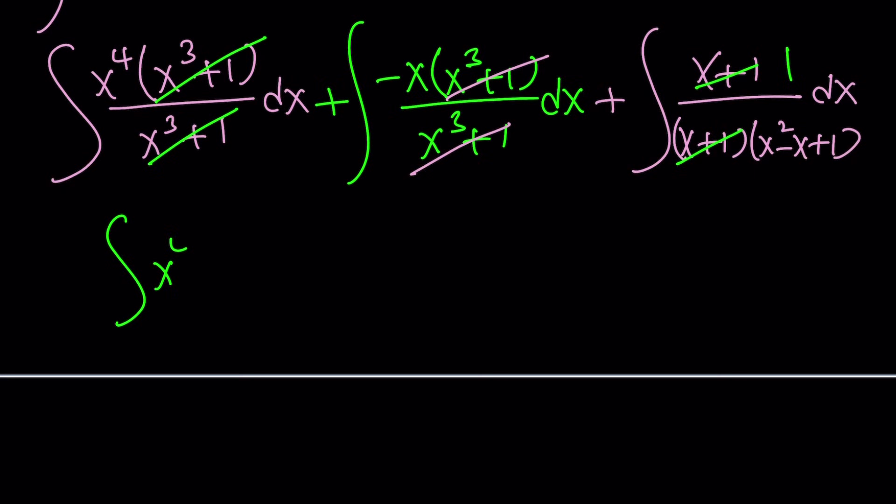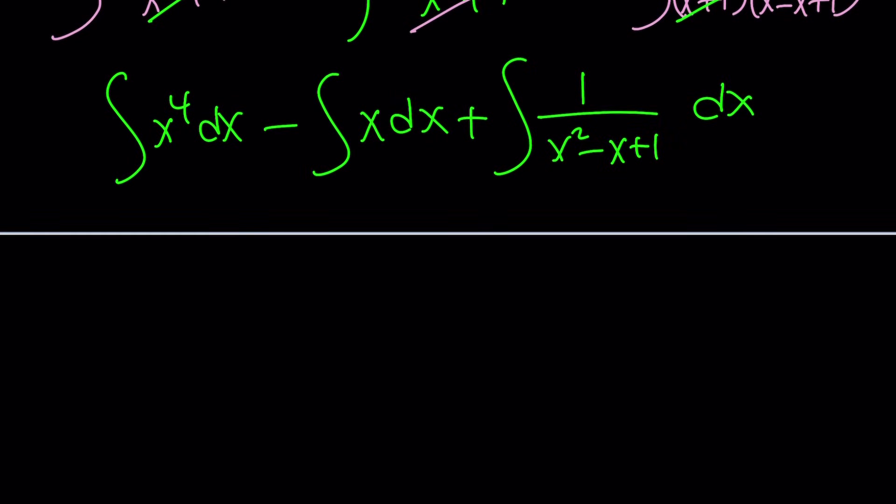Look at this. x to the fourth dx. Can't you integrate this? I can put the minus sign on the outside. Minus x dx. Plus, I have one over x squared minus x plus one dx. Awesome. How do you integrate x to the fourth? Easy. You just increase the power by one and divide by the result. Resulting number, whatever you want to call it. In other words, this is x to the fifth divided by five.